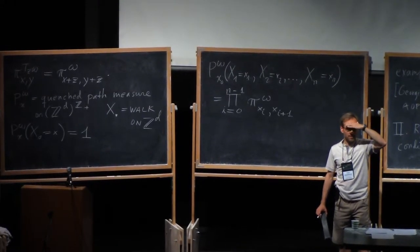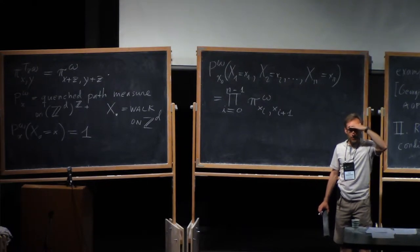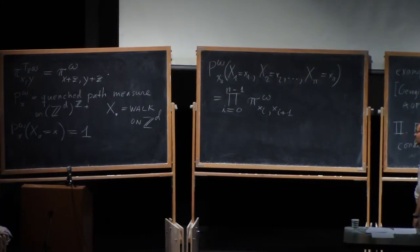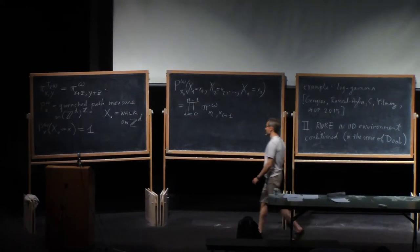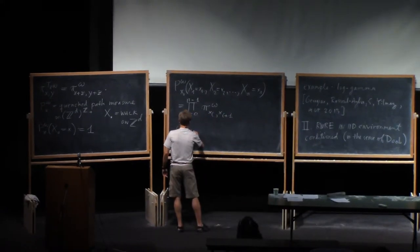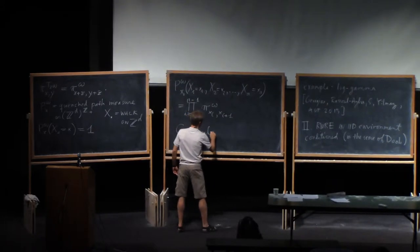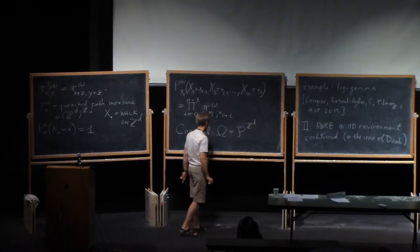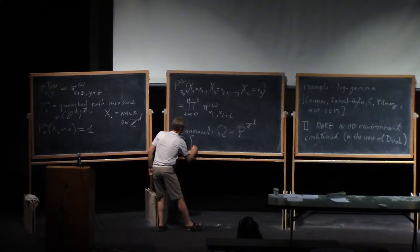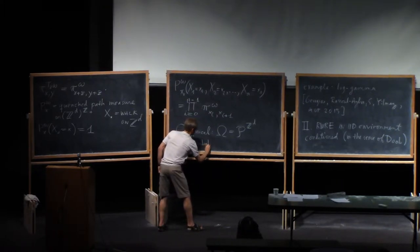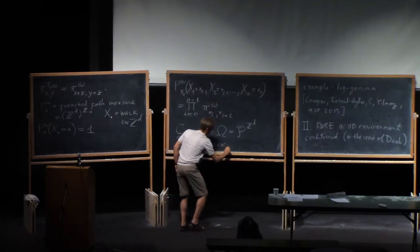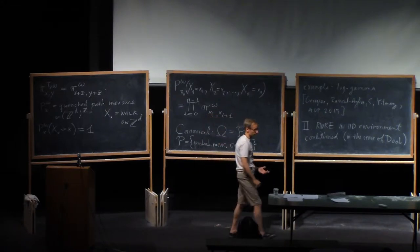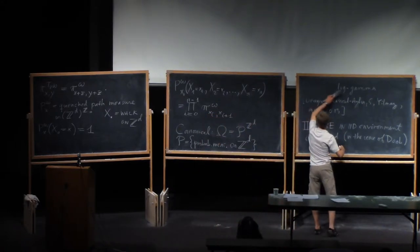So, that's the general RWRE model on Z^D. Anything I could clarify at this moment? It's funny to stand up here in the bright lights with no contact with you guys out there. Any questions at this point? So, obviously, like we often do in probability, we construct things on canonical probability spaces.